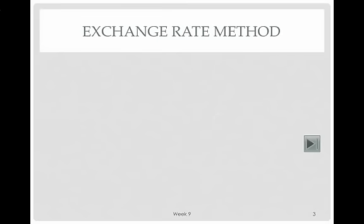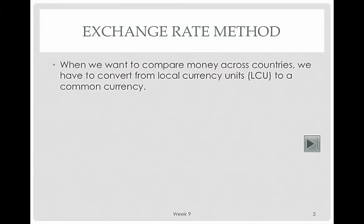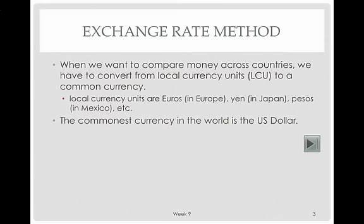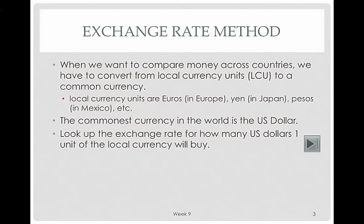Let's talk about the exchange rate method. To compare money across countries, we have to convert from local currency units to a common currency. Local currency units are euros in Europe, yen in Japan, pesos in Mexico, and so on. The most common currency in the world is the US dollar, and that's what we usually convert to. The exchange rate tells you how many US dollars one unit of the local currency will buy.